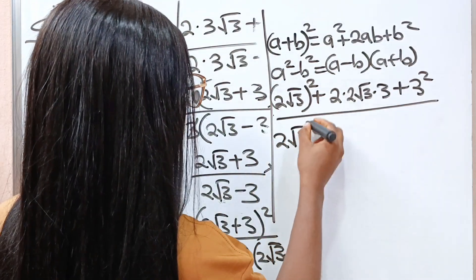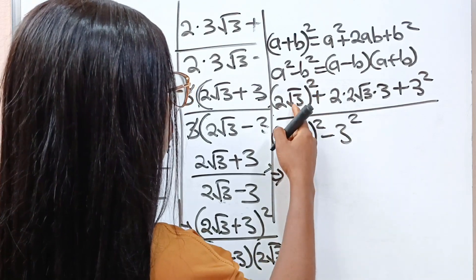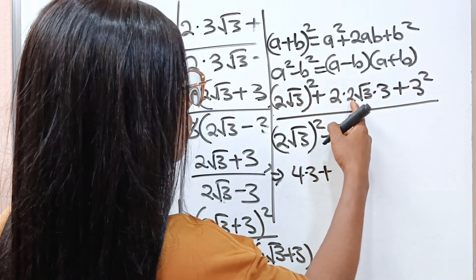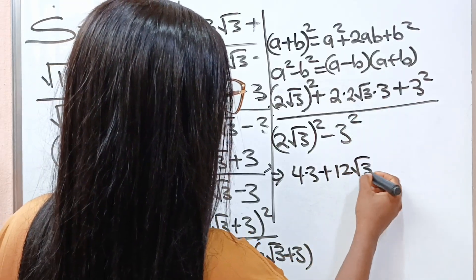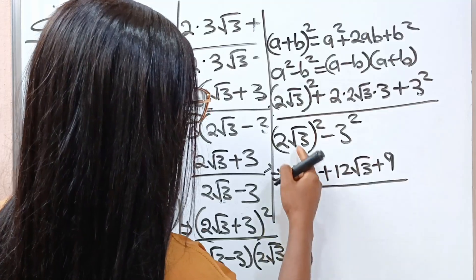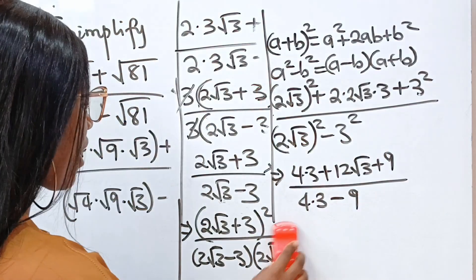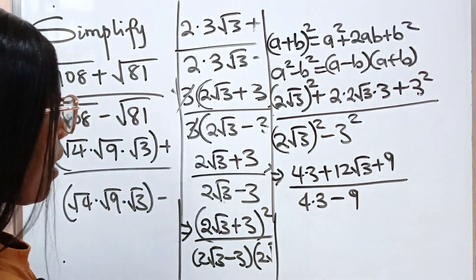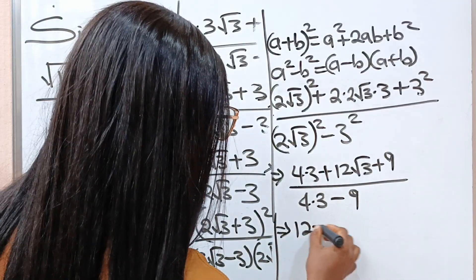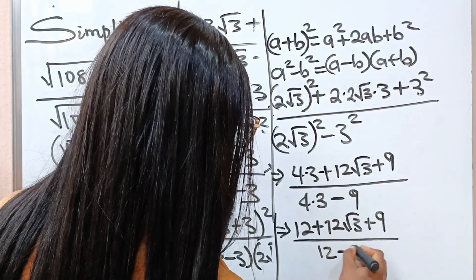So 2 squared gives us 4 and root 3 squared gives us 3, so we have 4 times 3 here. Plus 2 times 2 is 4, and 4 times 3 is 12, giving us 12 root 3. Plus 3 squared is 9. Divided by: 2 squared is 4, root 3 squared is 3, so 4 times 3 is 12 minus 3 squared which is 9. So we have 12 plus 12 root 3 plus 9, all divided by 12 minus 9.